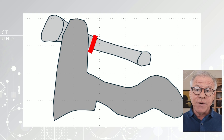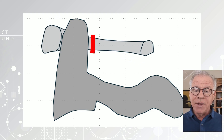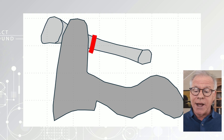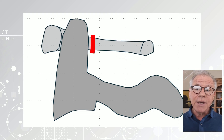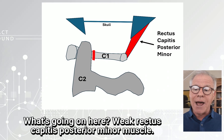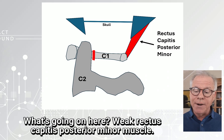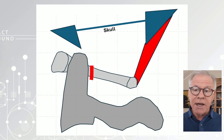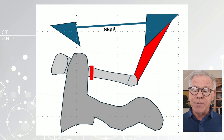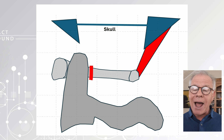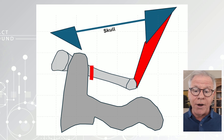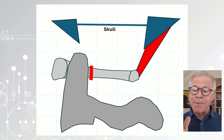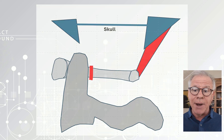If that transverse ligament were properly tight, you couldn't get this kind of motion at all. Now the other thing that's probably happening is the rectus capitis posterior minor attaches to the back of C1 and would control that C1 angle. So there's probably another issue of a weak rectus capitis posterior minor allowing this motion as well.